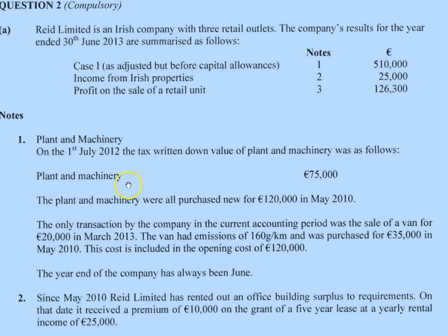All the details we need for capital allowances: first, what's the year-end of the company. We're doing the year-end 30th of June 2013. That's important because we'll be using that for calculating tax-written-down values.